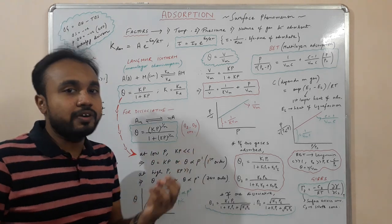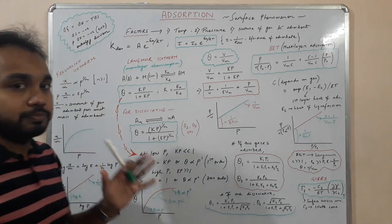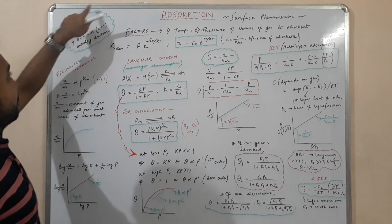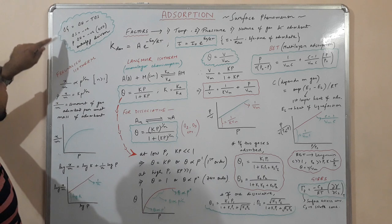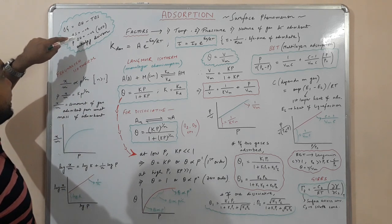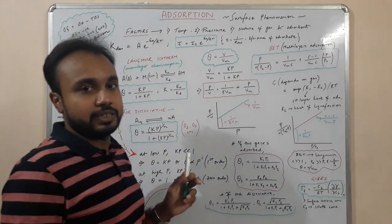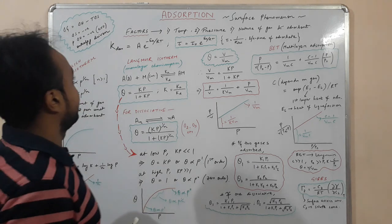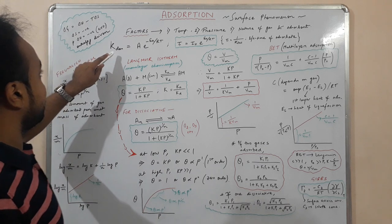Since molecules get adsorbed, entropy decreases, so ΔS is negative. In the equation ΔG = ΔH − TΔS, when ΔS is negative, the −TΔS term becomes positive. In order to make the reaction feasible, ΔH must be negative, which implies it is an exothermic reaction. So adsorption is an enthalpy-driven process.